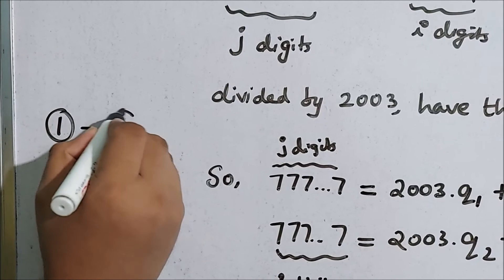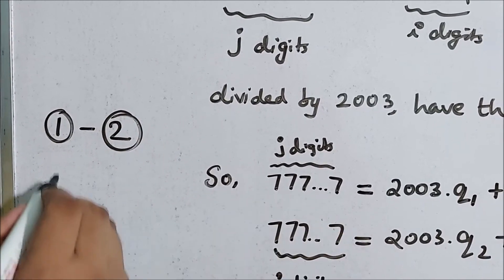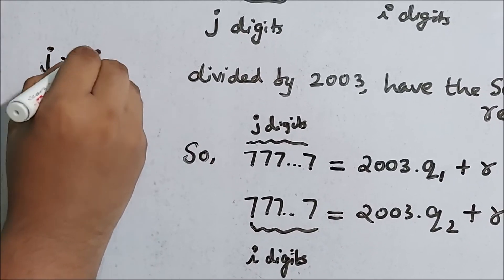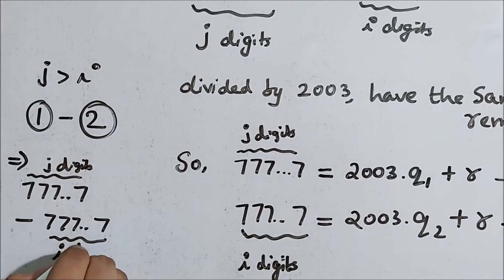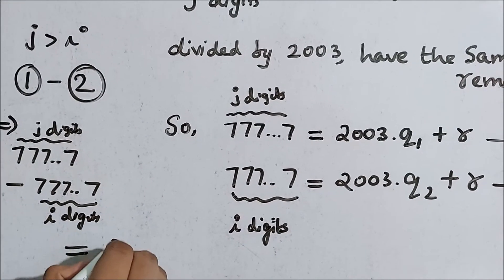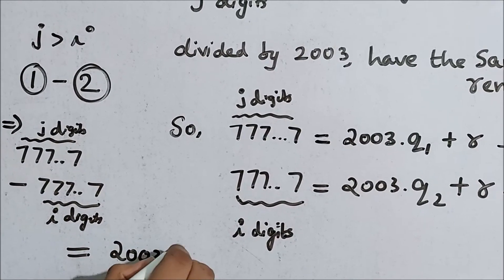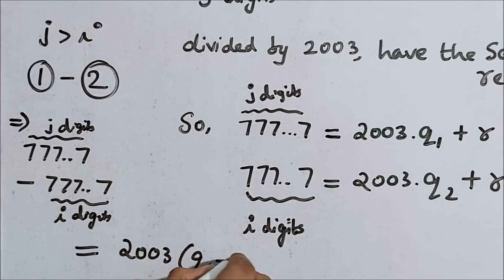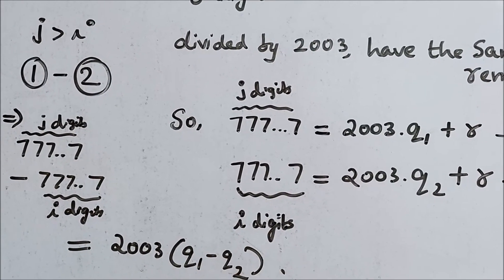We have also assumed without loss of generality that j is greater than i. So we subtract equation 2 from 1. We get that the LHS is nothing but the difference of these two numbers and the RHS we get is 2003 into q1 minus q2.